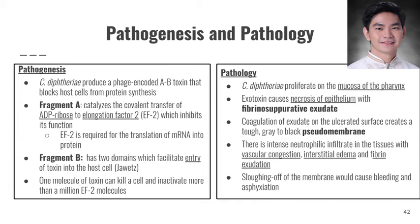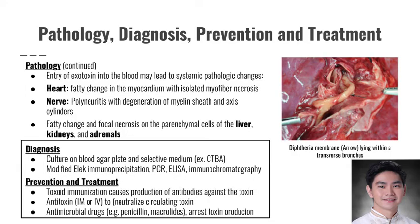There is coagulation of exudates on the ulcerated surface, creating a tough, grey-to-black pseudomembrane. There is also intense neutrophilic infiltrate in the tissues with vascular congestion, interstitial edema, and fibrin exudation. Lastly, there will be sloughing off of the membrane, which would cause bleeding and asphyxiation in patients. Diphtheria causes systemic pathologic changes specifically to the heart, nerve, liver, kidneys, and adrenal glands — this is specific to the respiratory form of diphtheria.